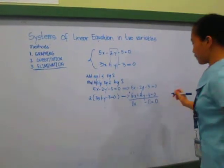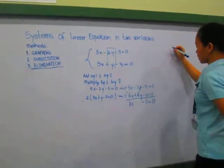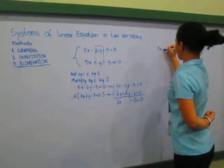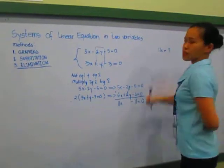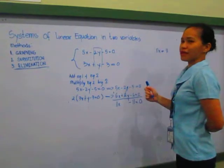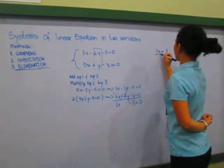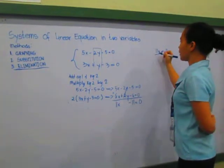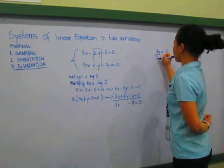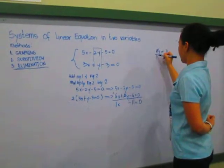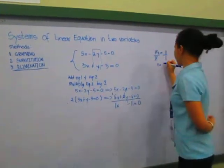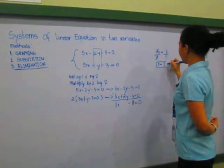Then the next step is we have to transpose it. 11x is equal to positive 11, since when you transpose the sign will automatically change. In order to get the value of x, we have to divide it by its coefficient. So x is equal to 11 divided by 11, which is equal to 1. We have our value of x.